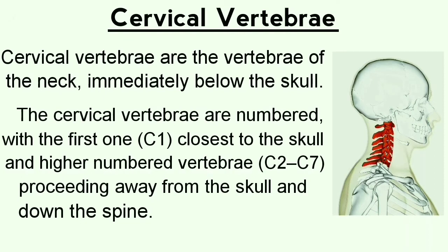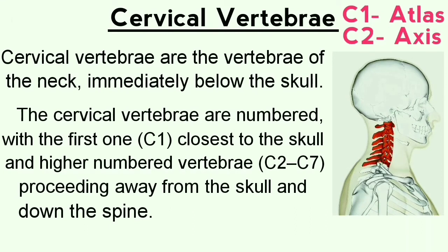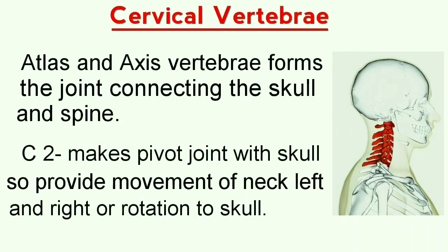The higher numbered vertebrae, C2 to C7, proceed away from the skull and down the spine. C1 is called atlas and C2 is called axis. C1 and C2 form the joint connecting the skull and the spine. C1 (atlas) is directly jointed to the skull, and C2 (axis) connects through C1.